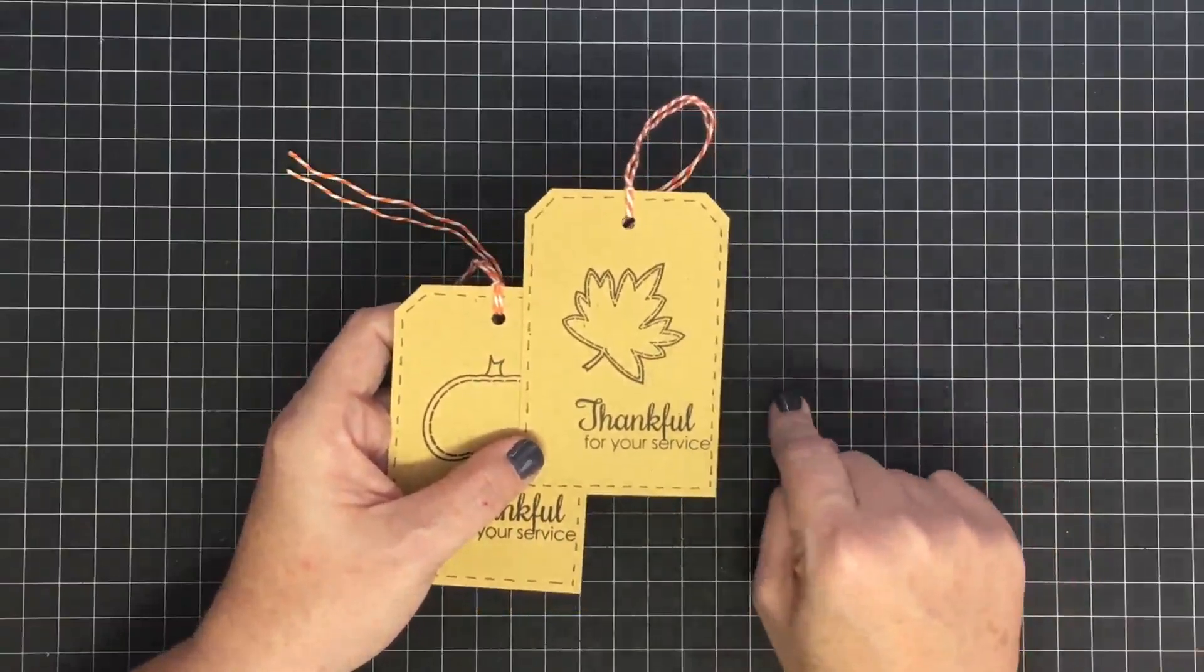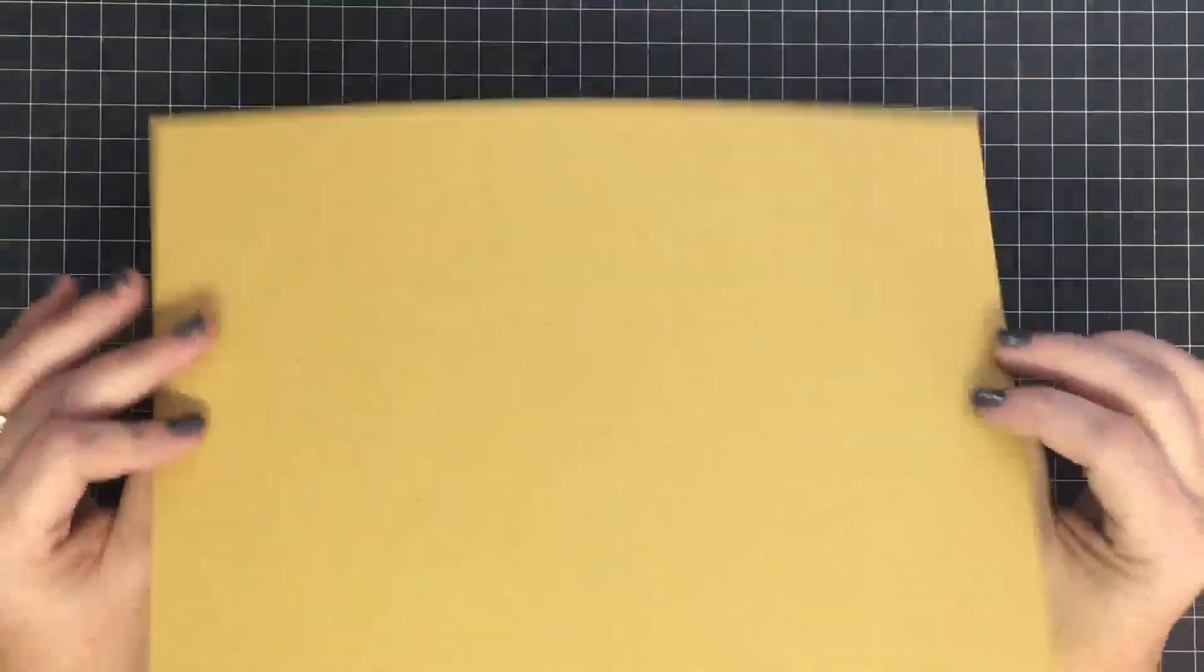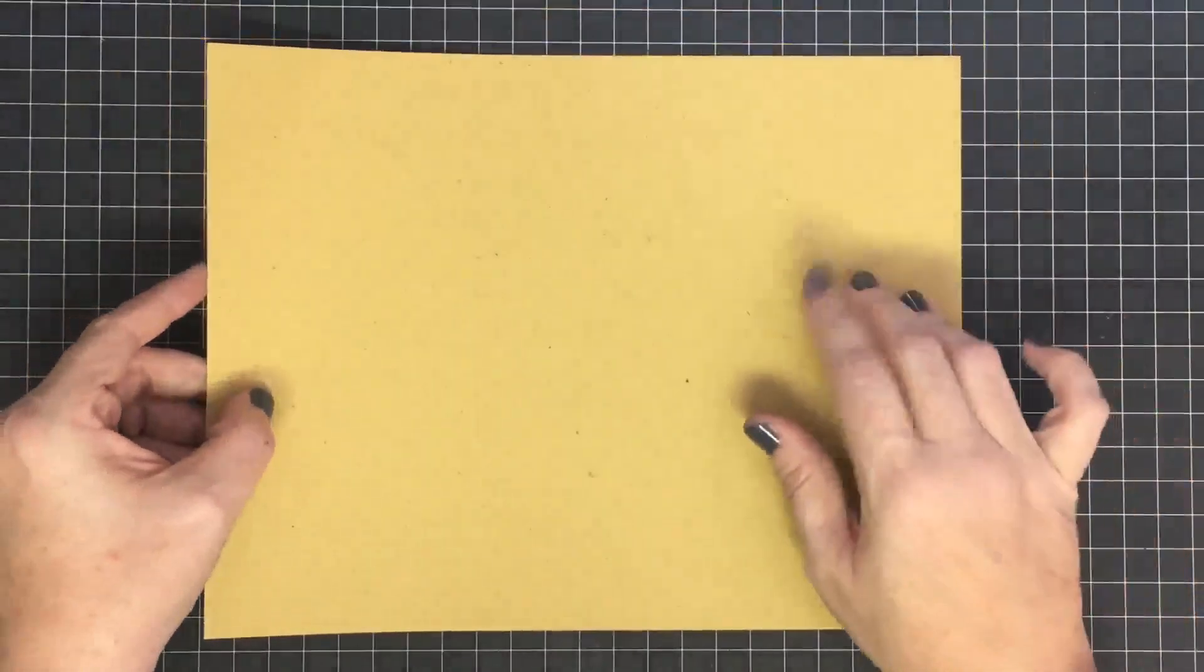So we'll talk more about it at the end, but now let's make these tags. These guys come from one sheet of 8.5 by 11 cardstock. Here's some cardstock in kind of a craft color, not exactly craft but close. Look how simple this is.